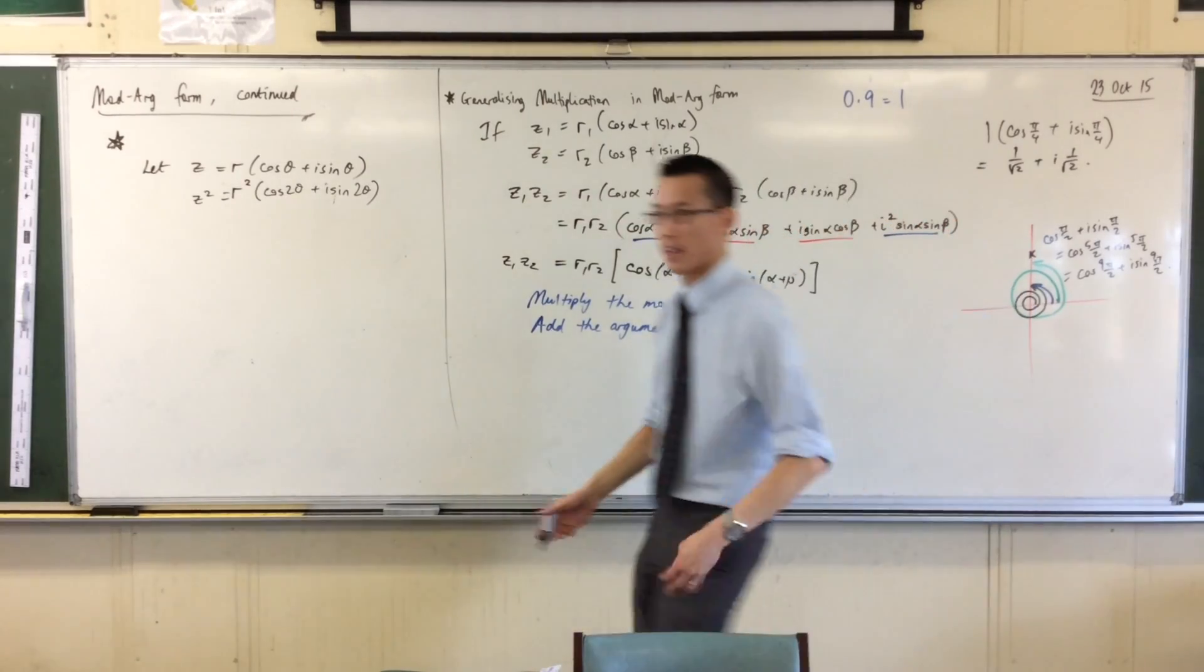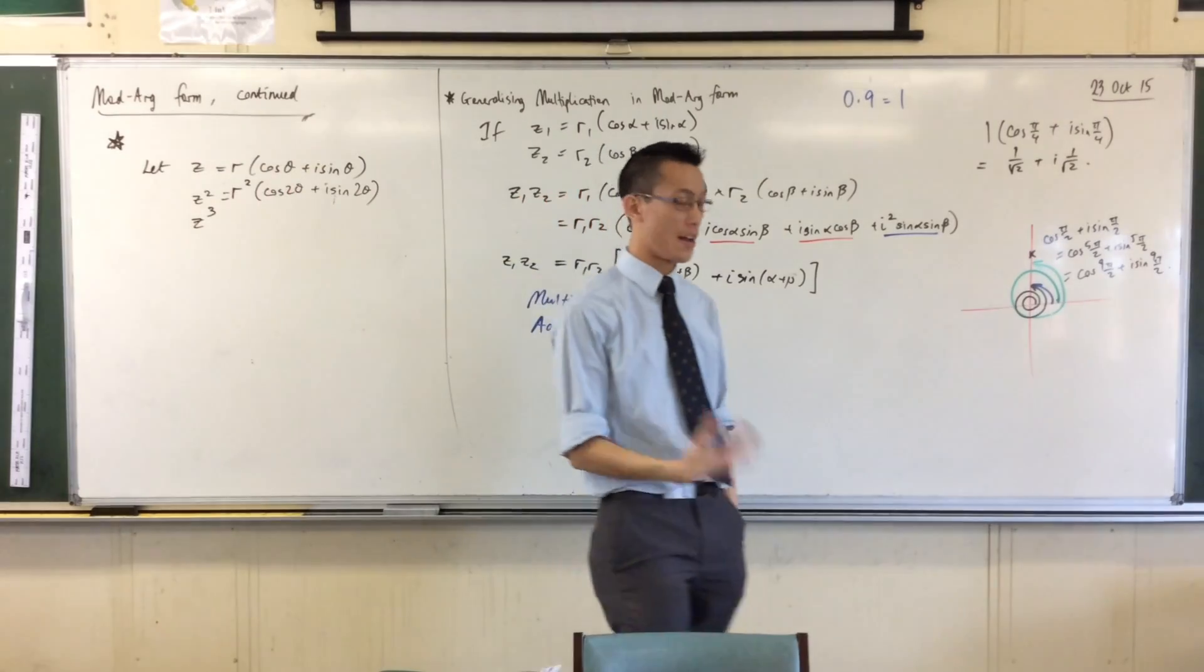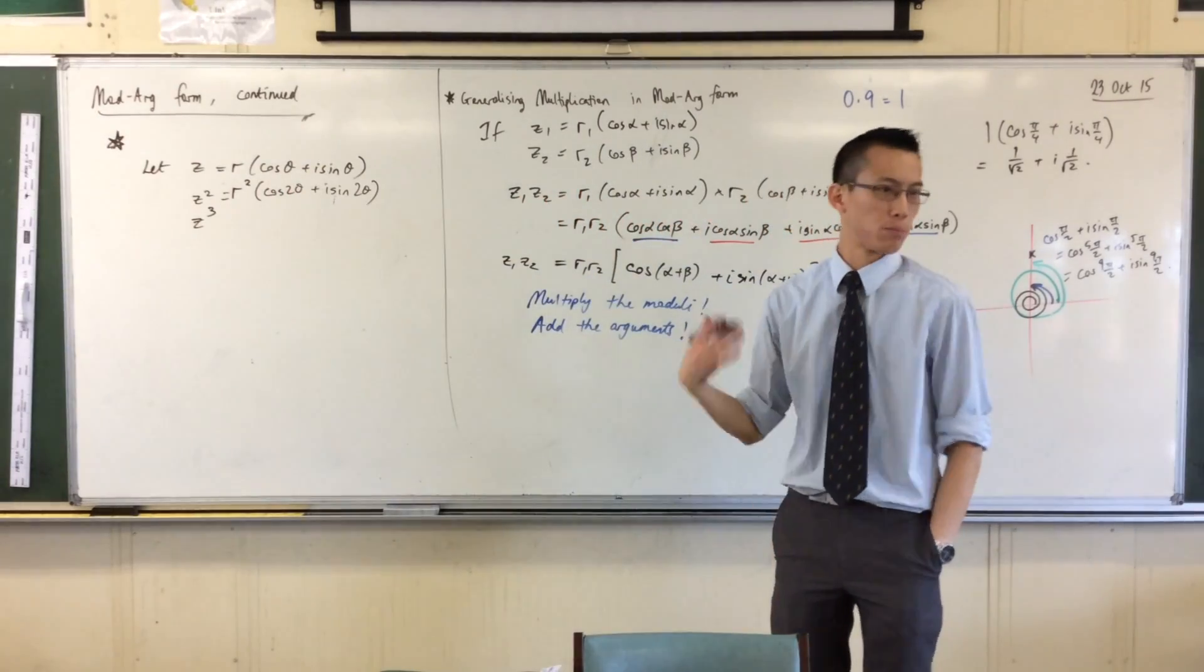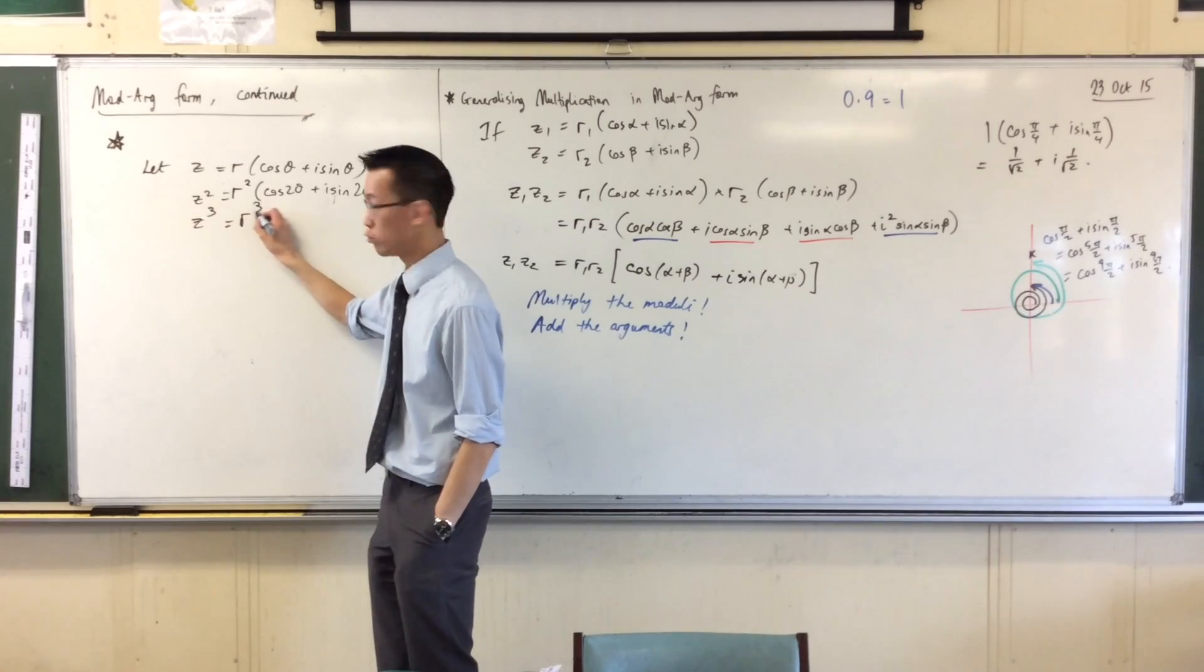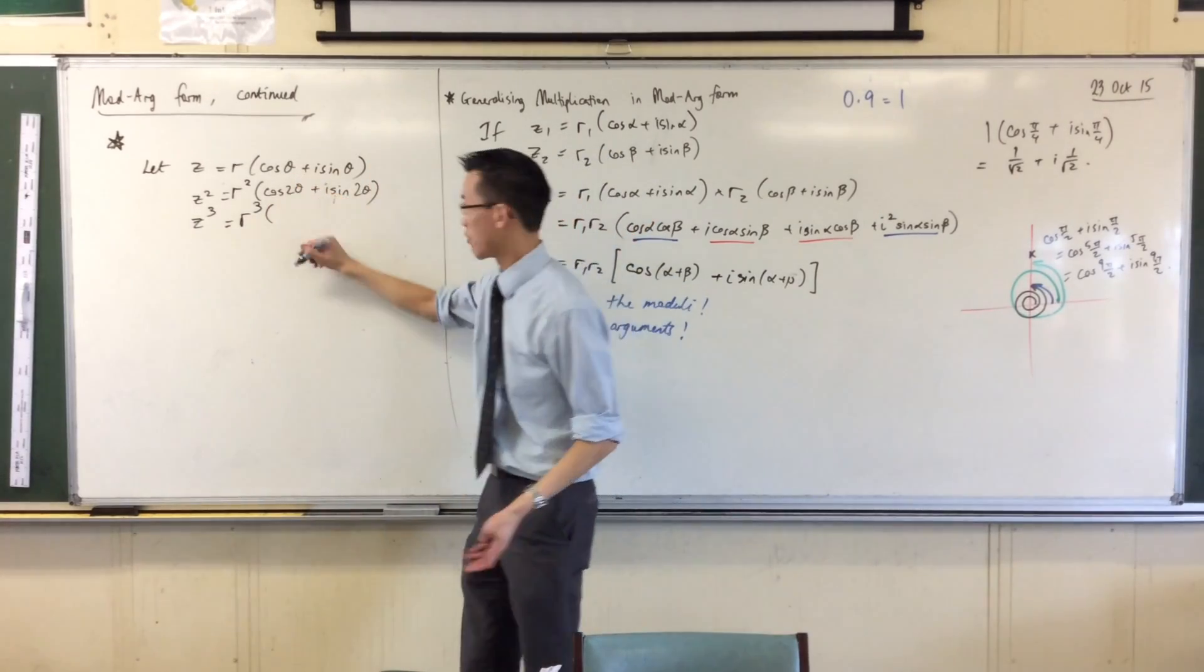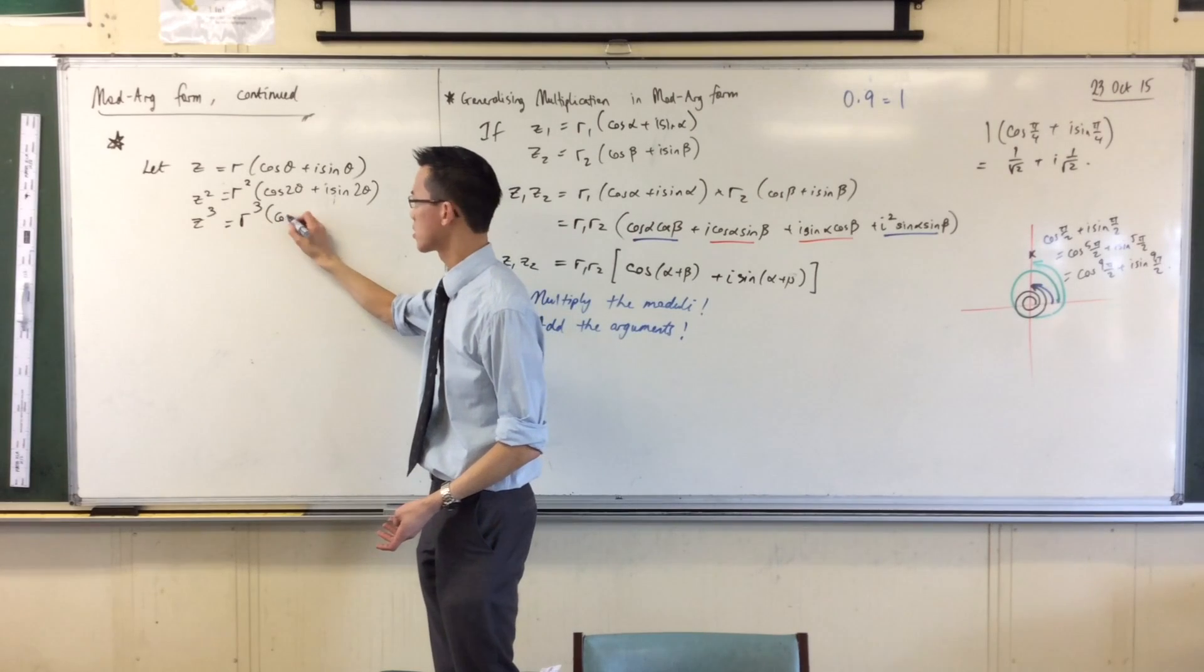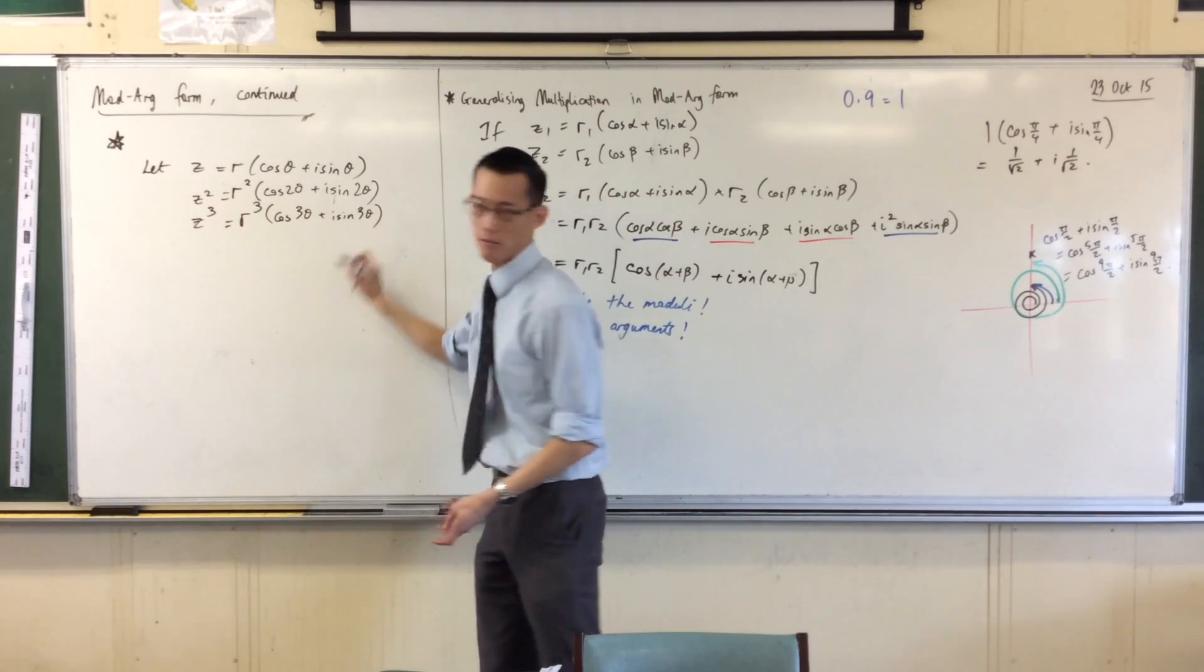Now what if I did it again? If I multiply by z, the original one, another time, I'll multiply by the same modulus so I get R cubed, and then I add the same argument, which is still θ. So this guy's going to be cos 3θ plus i sin 3θ.